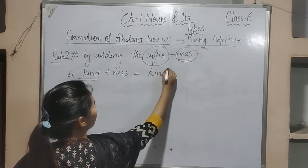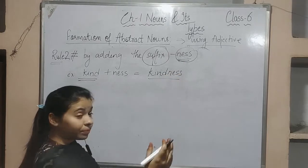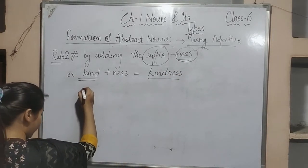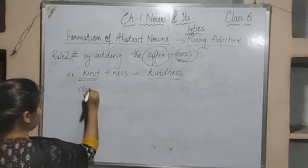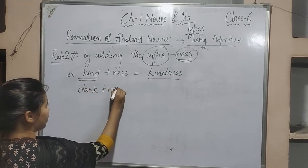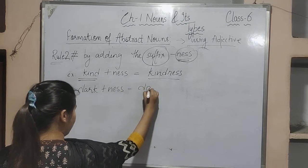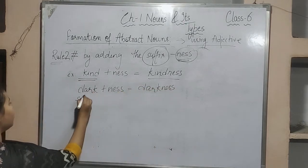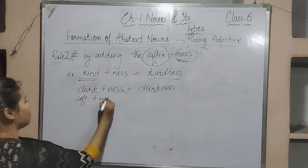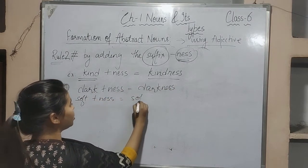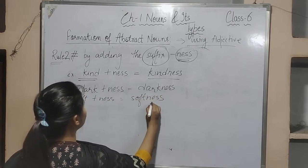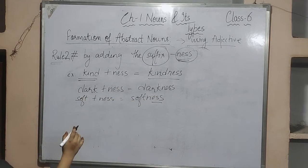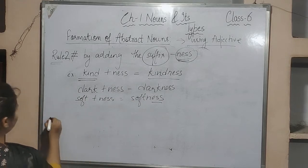For example: 'kind' is an adjective — kind + ness = 'kindness,' which is an abstract noun. Similarly, dark + ness = 'darkness,' and soft + ness = 'softness.' This was rule number two — very easy, you just have to add the suffix -ness.